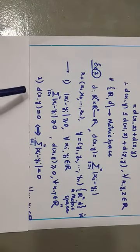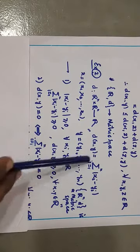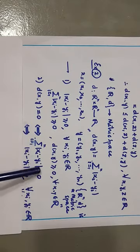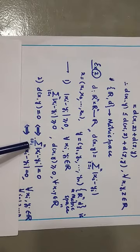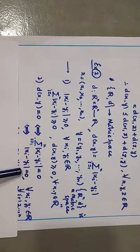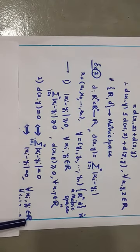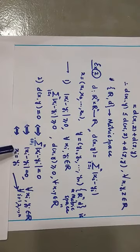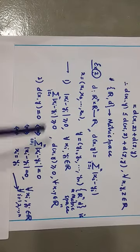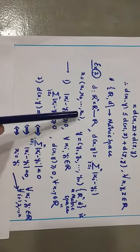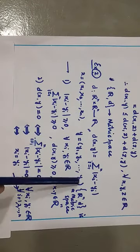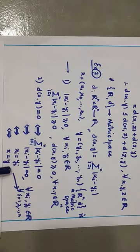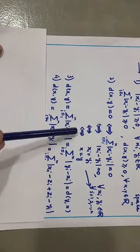For the second condition: D(x,y) = 0 if and only if the summation equals 0. Since this is a sum of N non-negative terms, each term must individually equal 0. So |xᵢ − yᵢ| = 0 for all i from 1 to n, which means xᵢ = yᵢ for each i. This gives x₁ = y₁, x₂ = y₂, …, xₙ = yₙ, meaning all corresponding components are equal, therefore x = y. So D(x,y) = 0 if and only if x = y, and the second condition is satisfied.